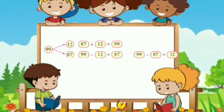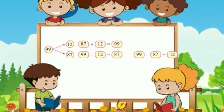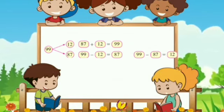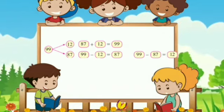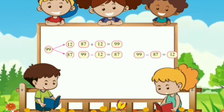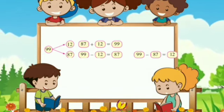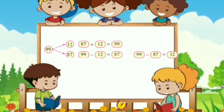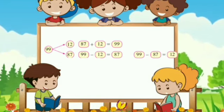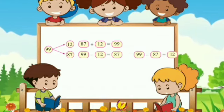Next example — three numbers are given: 99, 12 and 87. Make addition and subtraction examples. Addition: 87 plus 12 is equal to 99. Subtraction example one: 99 minus 12 is equal to 87. Another subtraction example: 99 minus 87 is equal to 12.